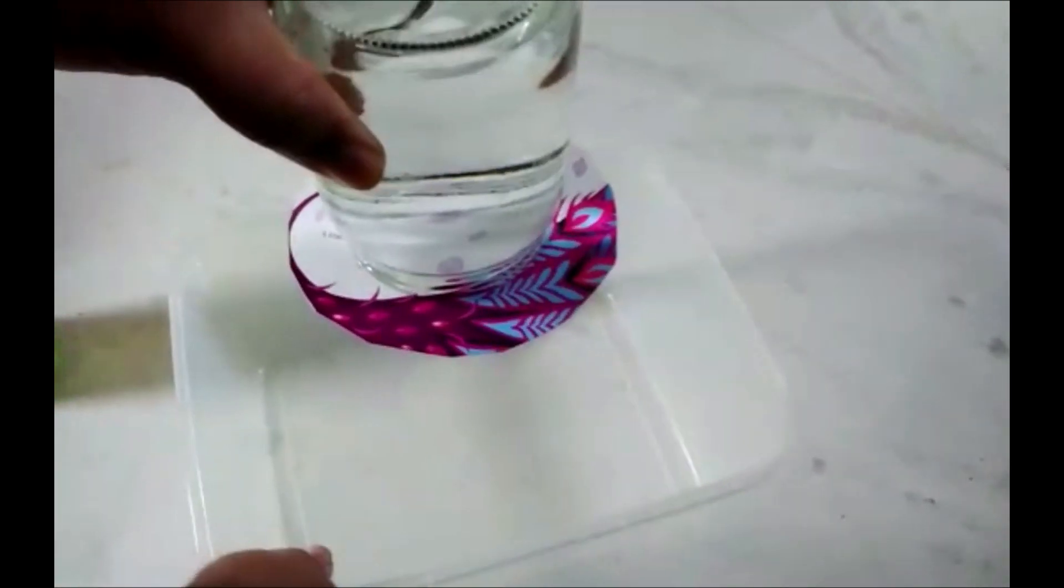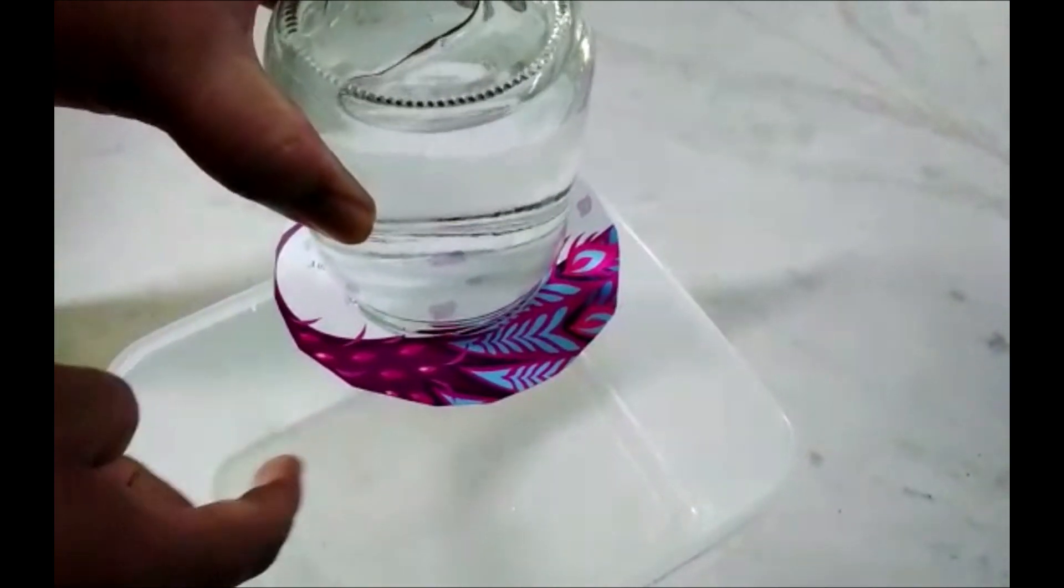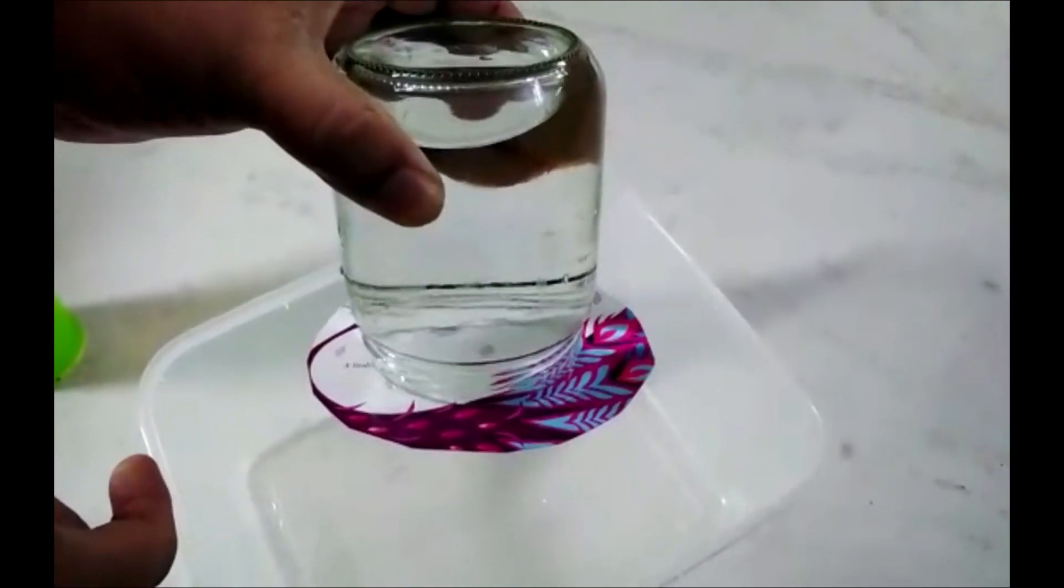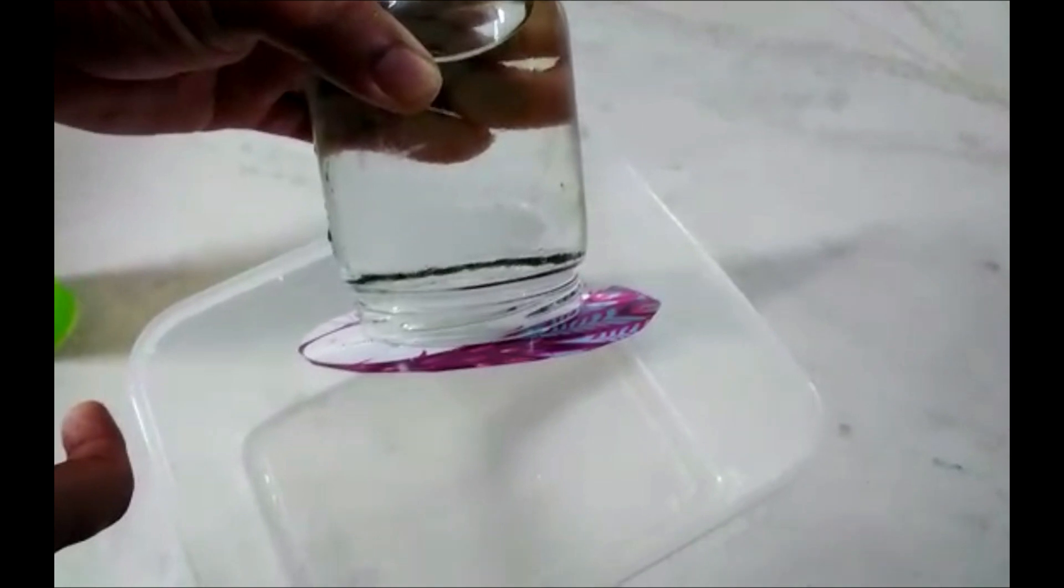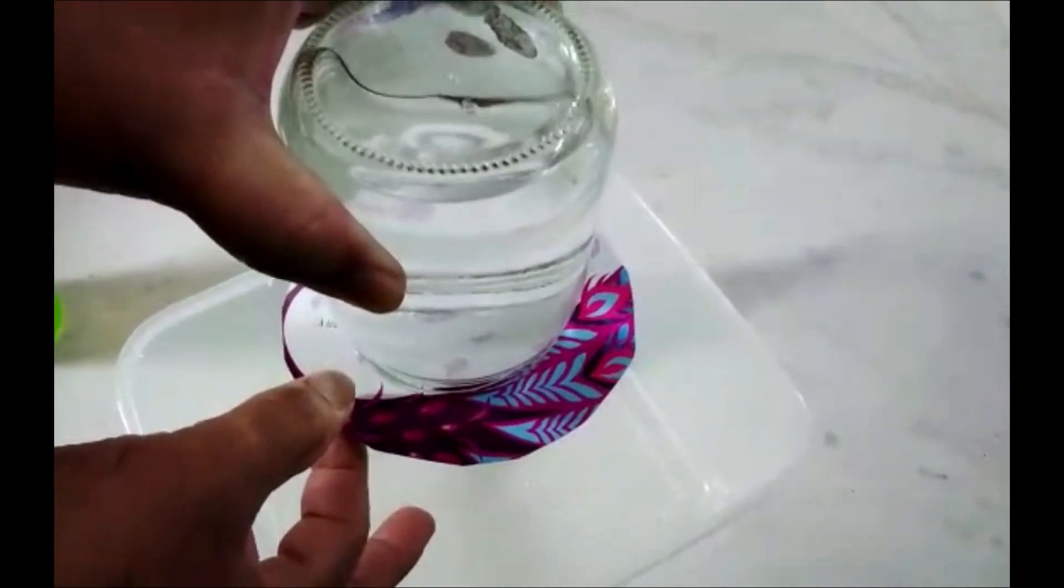The air pressure is stopping all the water from falling down. I can slowly start tilting it—it still holds in place as long as the card doesn't slide off. You can see there's nothing stopping the water as I pull out.